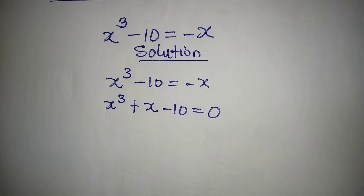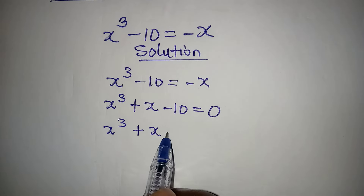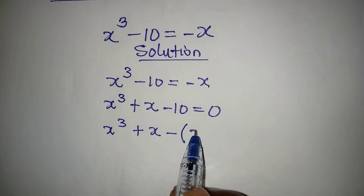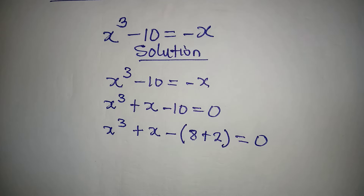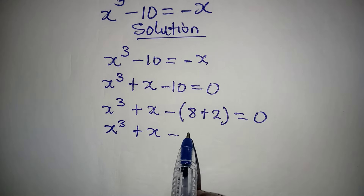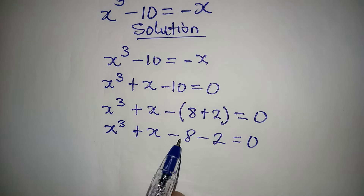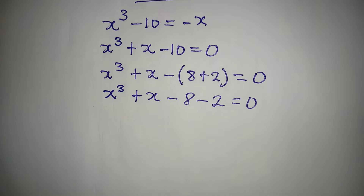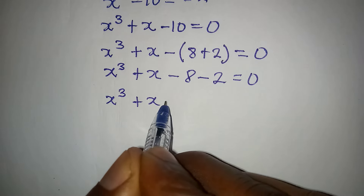From here we have x to the power of 3 plus x minus, then open brackets 8 plus 2, equal to zero. What I have done is break 10 into 8 and 2. Now open the brackets, so I have x to the power of 3 plus x minus 8 minus 2 equal to zero. If you put those two together you will still have minus 10.